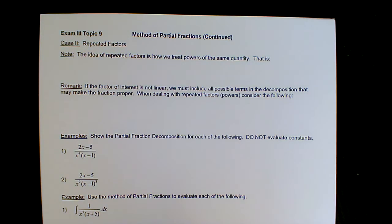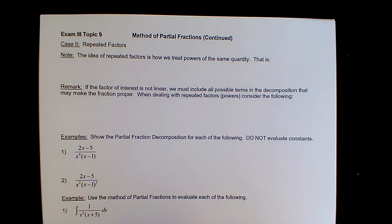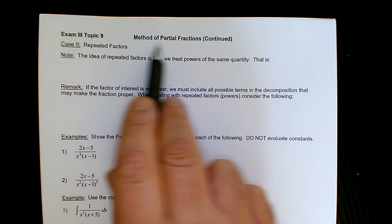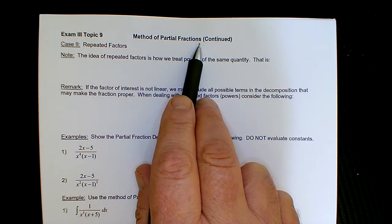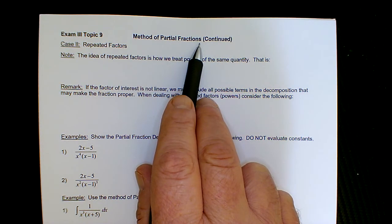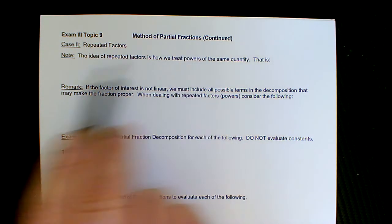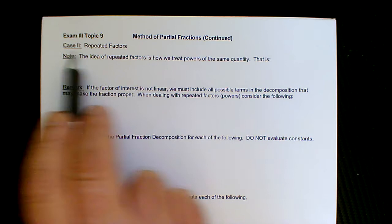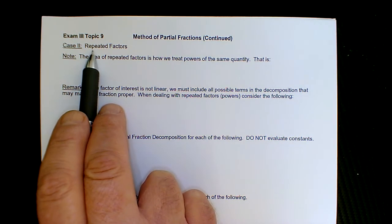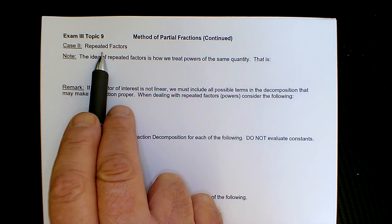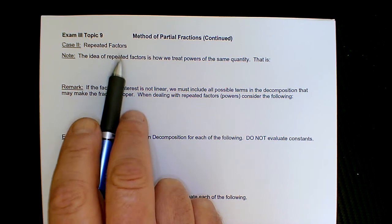Hello everyone, this is Topic 9 for Exam 3 — method of partial fractions continued. Last time we looked at Case 1, linear factors. Now we look at Case 2, what I refer to as repeated factors.